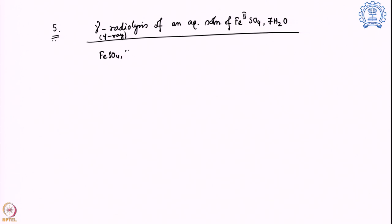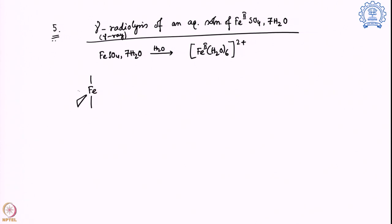When iron sulfate heptahydrate is dissolved in water, it forms Fe(H₂O)₆²⁺. The salt loses its sulfate ion and binds with 6 water molecules in an octahedral coordination geometry. Since iron has a +2 charge, the overall charge is also +2, giving us iron(II) hexahydrate.